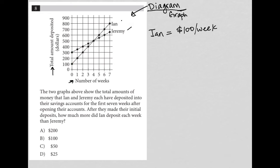And then how about Jeremy? So Jeremy starts out at 300 and it takes two weeks for Jeremy to get up to 400. I'm going to assume this is 350. So it looks like Jeremy is depositing $50 per week.